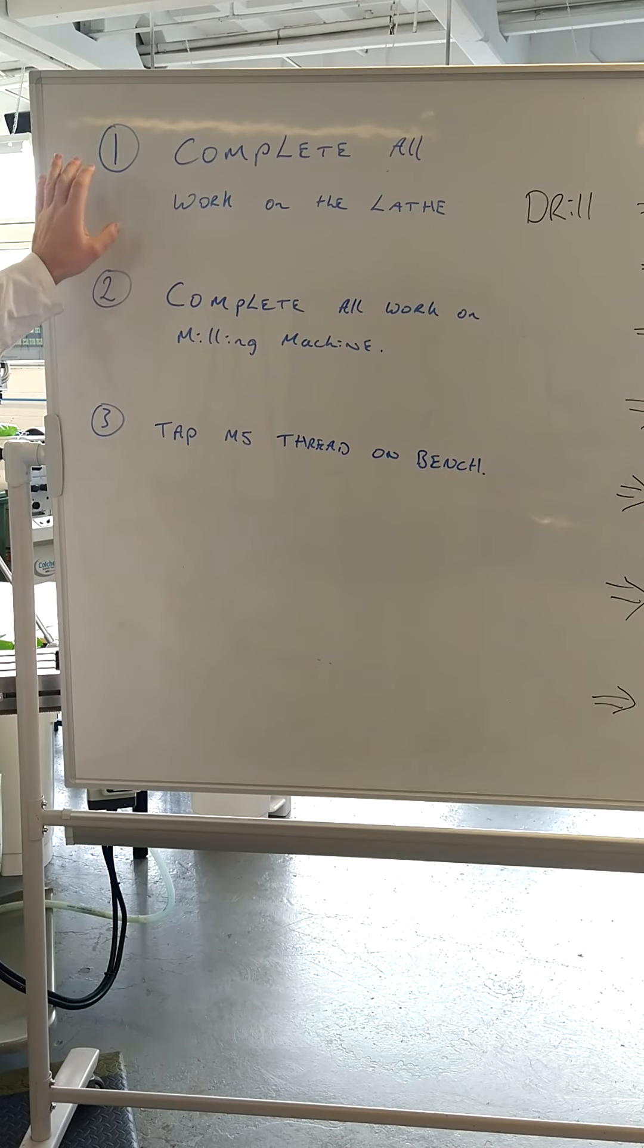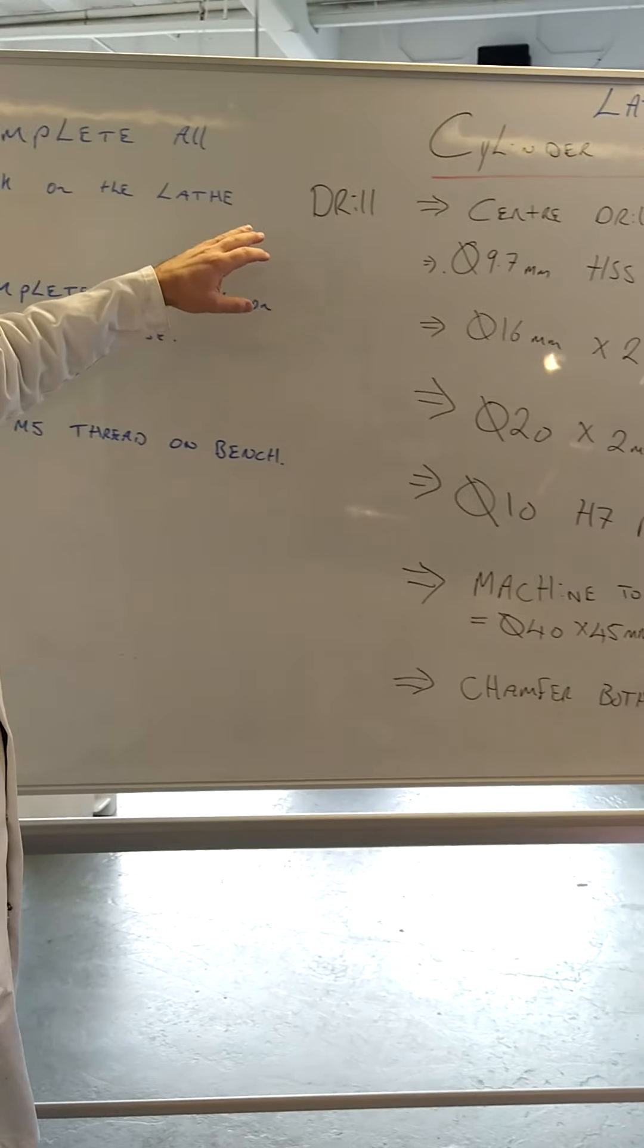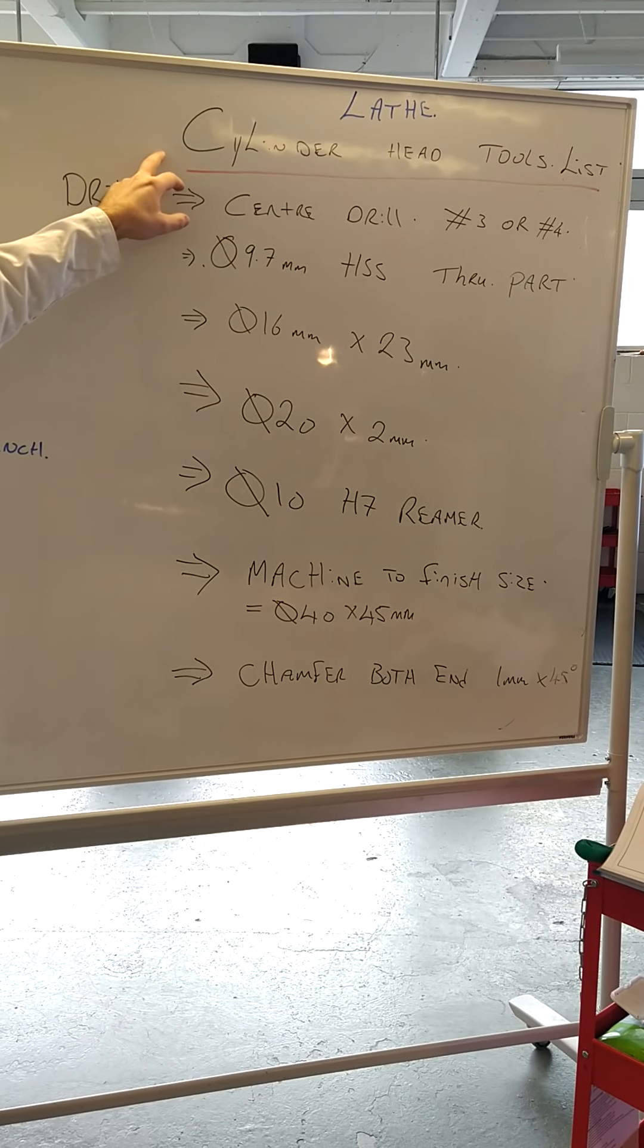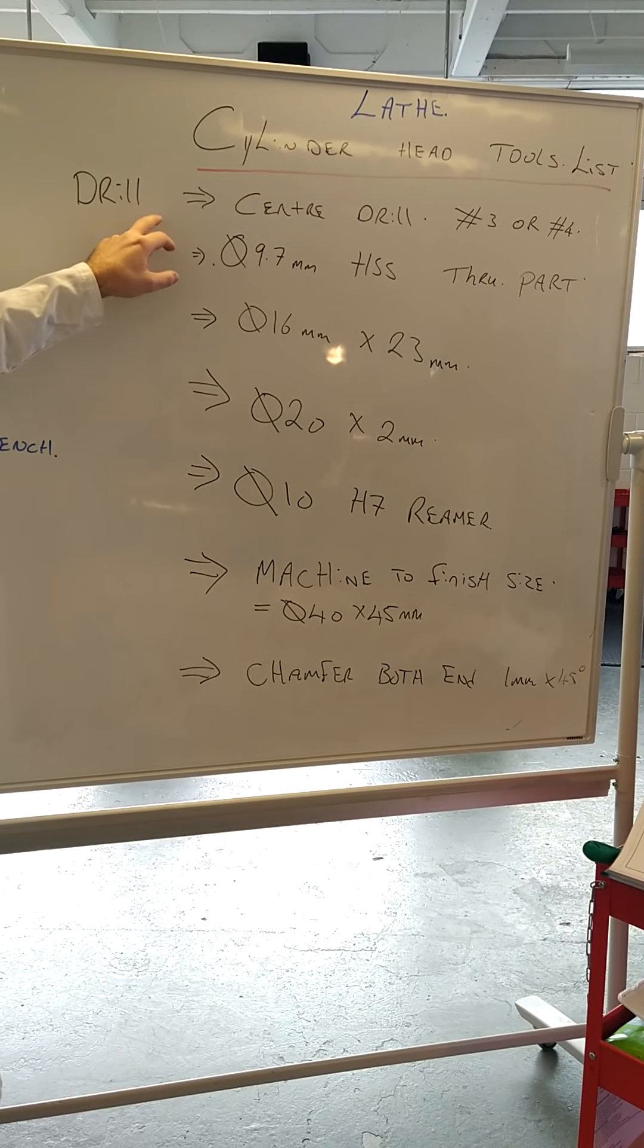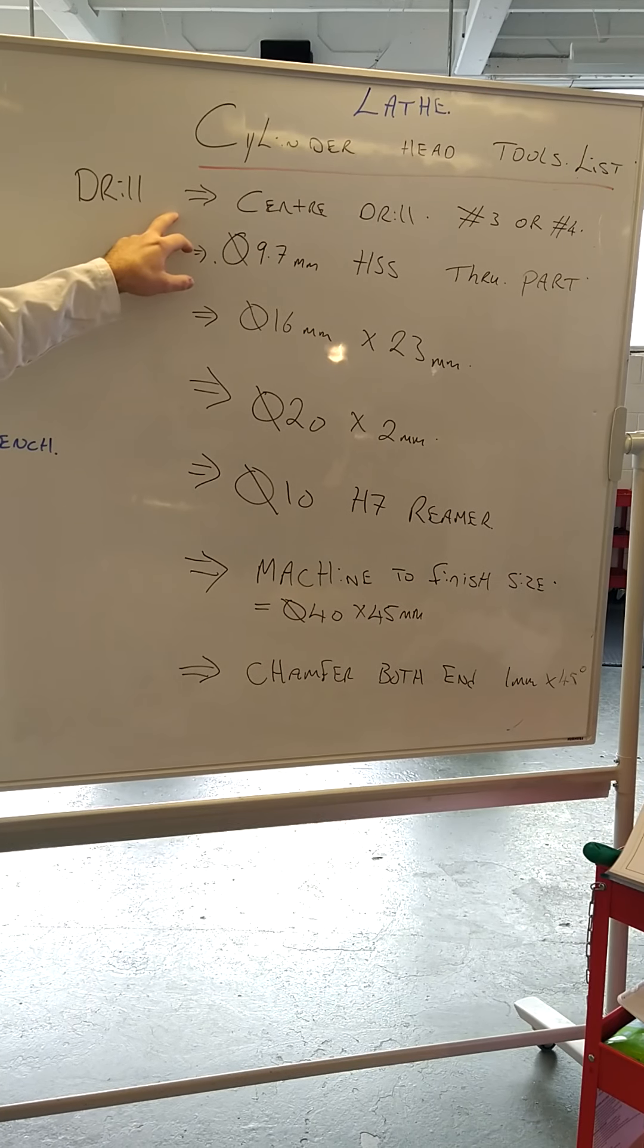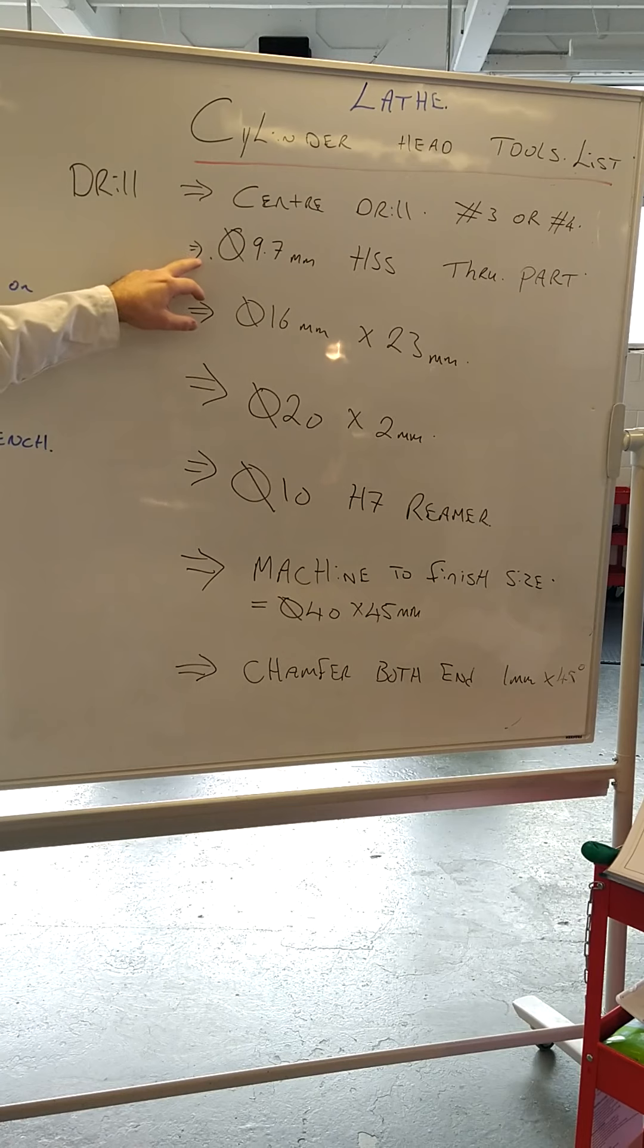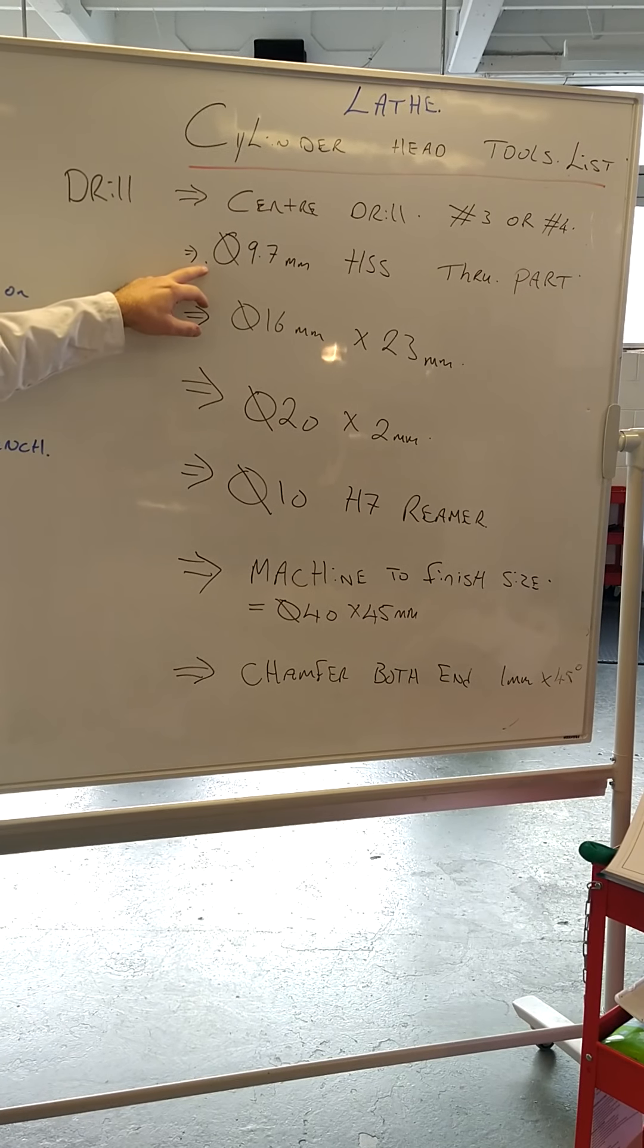So we're going to concentrate today on the lathe in this video. These are the list of tools that are going to be required. For the cylinder head tool list, you're going to need to get from the store a centre drill bit, number 3 or number 4. Drill that hole, which creates a pilot hole for the 9.7 drill bit.